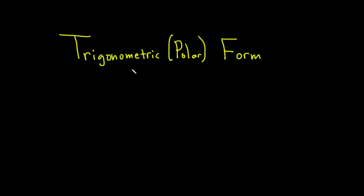Hello, in this video we're going to introduce what's called the trigonometric or polar form of a complex number. So first recall a complex number has a certain form. The standard form of a complex number is a plus bi, where i is equal to the square root of negative 1, called the imaginary unit.